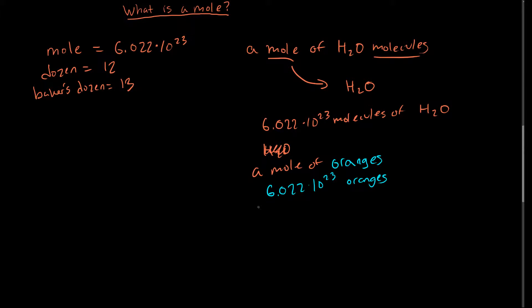So I would literally have this many oranges. And that's a lot of oranges. I read somewhere that if you had this many oranges, it would actually cover the Earth with a 9-mile thick layer of oranges. So what this example is trying to drive home is that a mole is just a word to represent some amount of something.